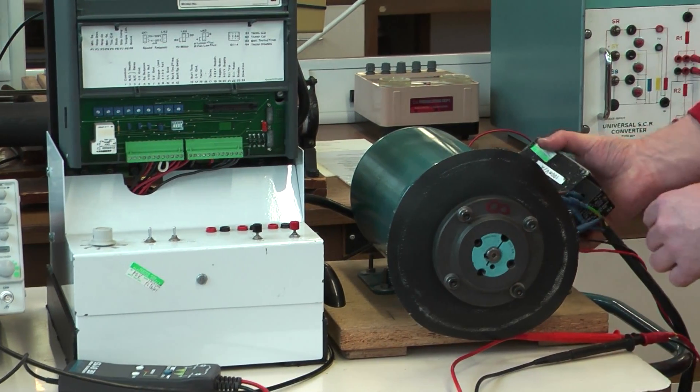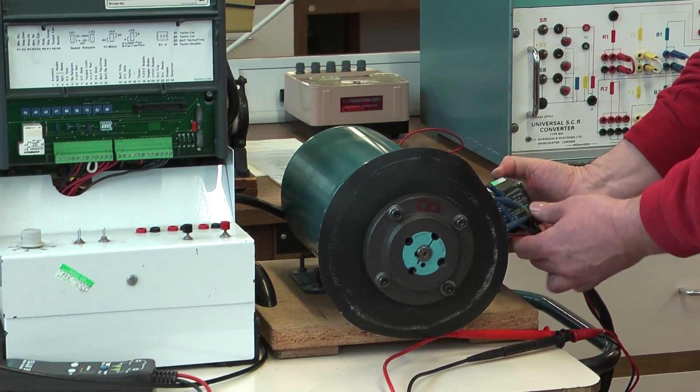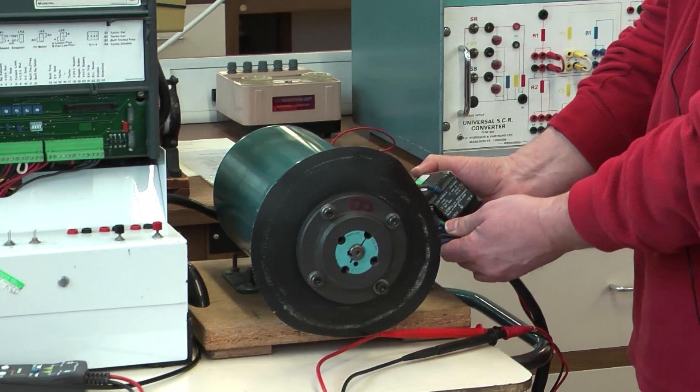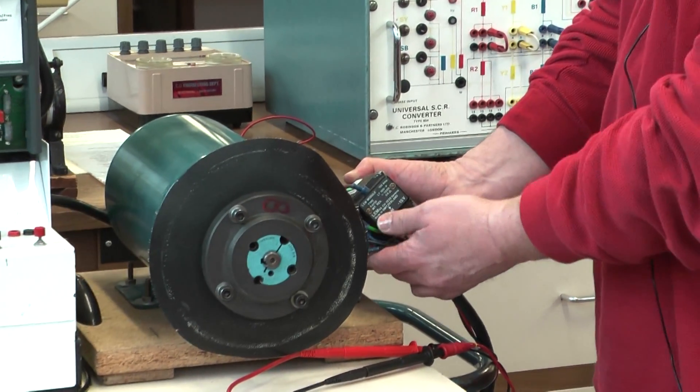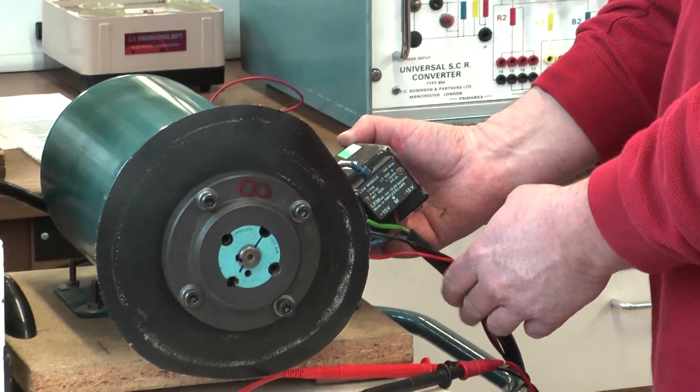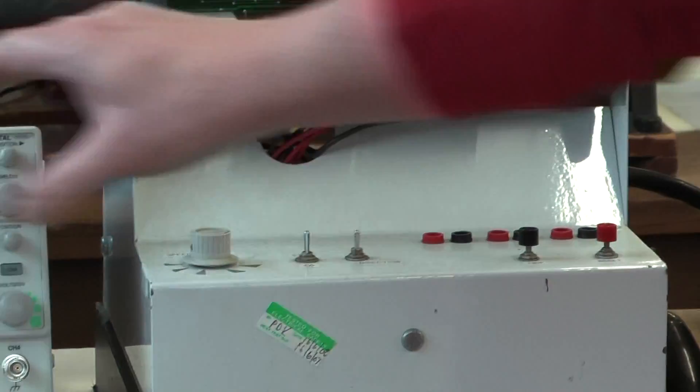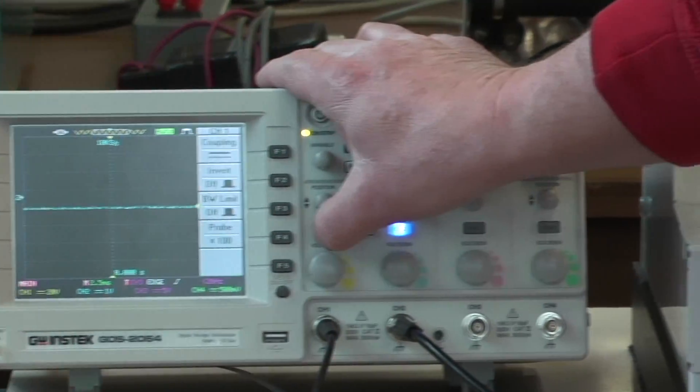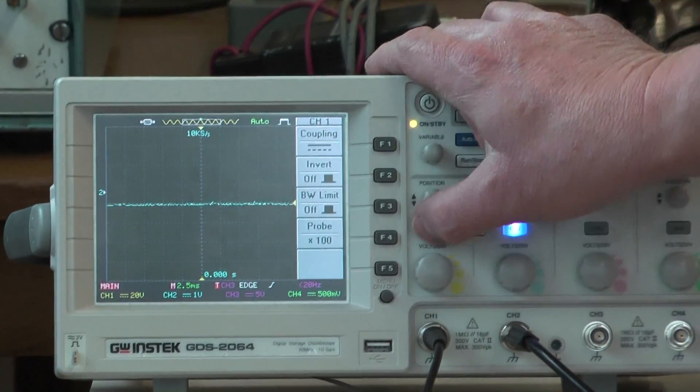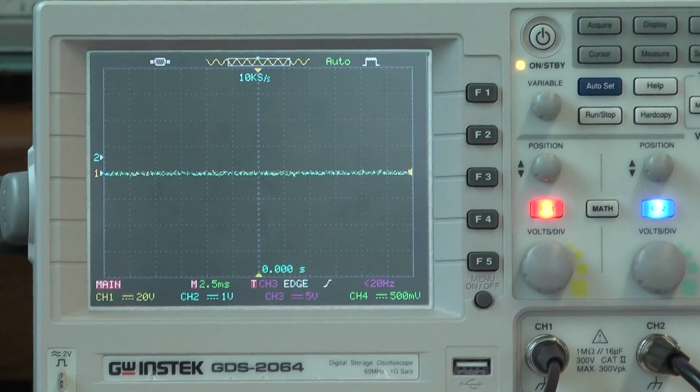We're going to measure the currents in the motor, again using an isolated current probe, often called an LEM as described here. We can measure the current, we can measure the voltage. At the moment I'm just showing the current here. Let's bring the voltage up and we're ready to turn on.